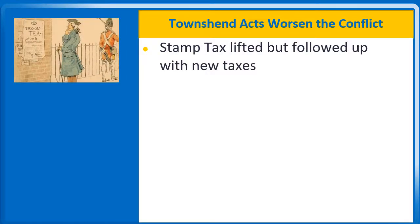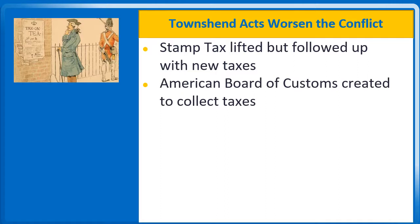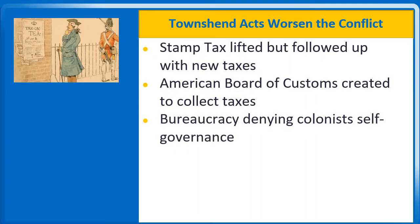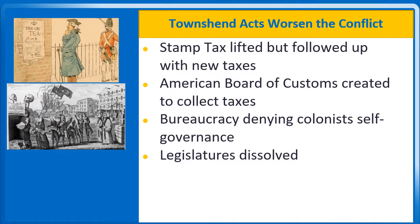After Parliament reluctantly lifted the stamp taxes, colonists celebrated the repeal and tensions eased — until Parliament followed up with the Townsend Acts in 1767. These acts instituted a fresh round of taxes, and their revenues were earmarked to pay a new colonial authority, the American Board of Customs, which would collect taxes independently of the colonial assemblies. From the perspective of the colonists, Britain was explicitly denying them their self-governance. The Townsend Acts also suspended the New York State Assembly for refusing to house and supply British troops. Once again, American colonists responded with meetings, petitions, and mobs. New Yorkers and later Bostonians seethed with anger over having their legislatures dissolved.